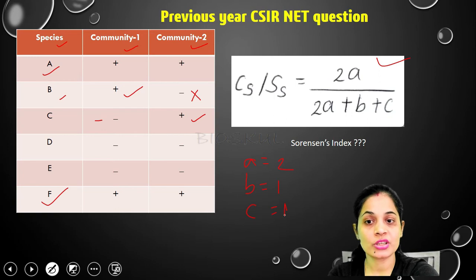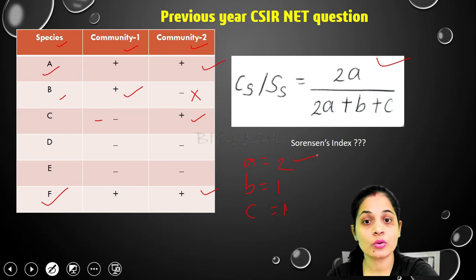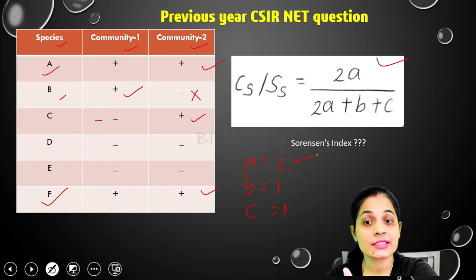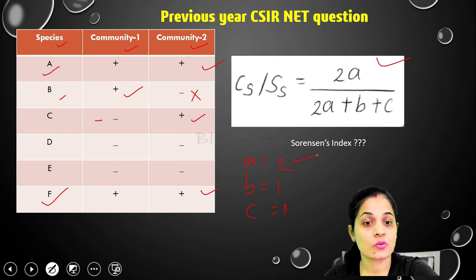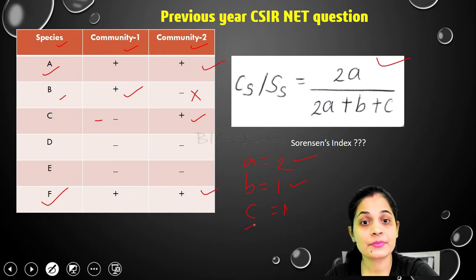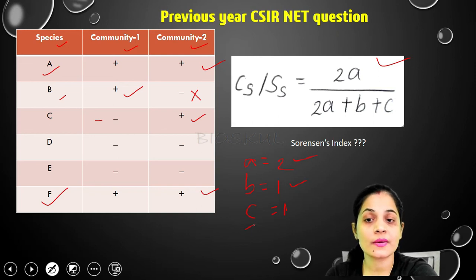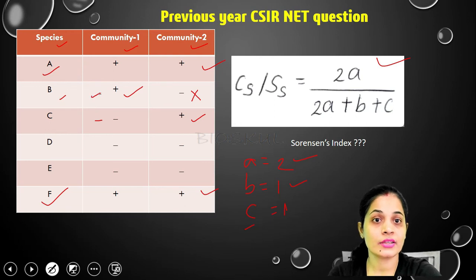To confirm: 'a' — species A and species F are present in both communities, so a = 2. 'b' — among species C, D, and E which are absent in community 1, only species C is present in community 2, so b = 1. 'c' — species B is absent in community 2 but present in community 1, so c = 1.